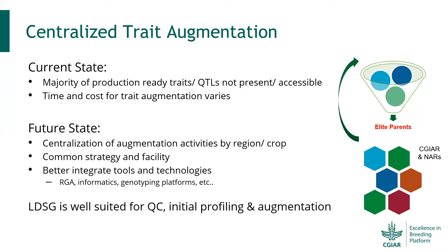It is often a separate pipeline that can be cranked out very effectively through a doubled haploid or RGA setup. Many programs we support are often struggling with many key traits not being present or easily accessible in elite backgrounds. Having each program convert their own materials by adding key traits is often not cost-effective. Ideally, this should be carried out in a very centralized manner, developing a dedicated team to perform augmentation with the proper setup and using the shared genotype platform.